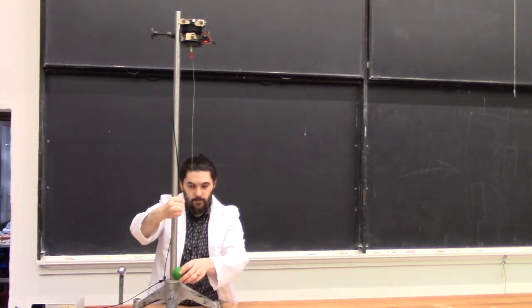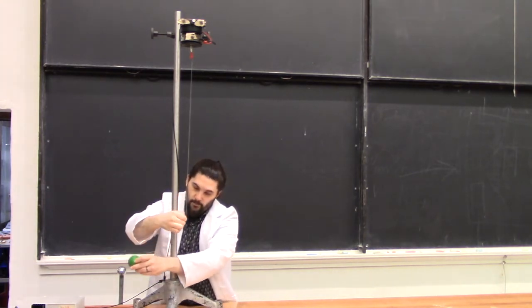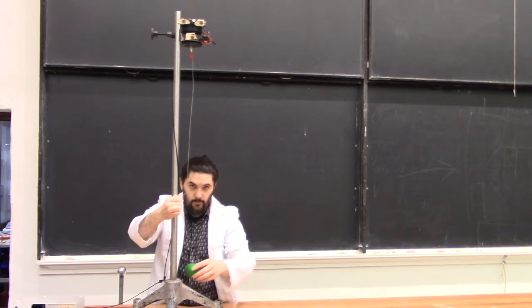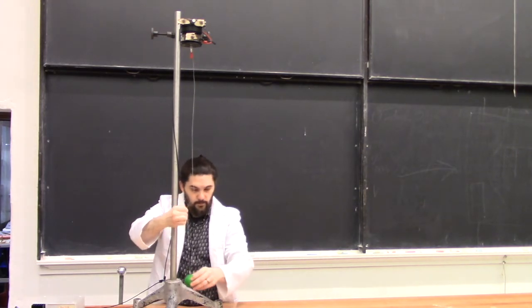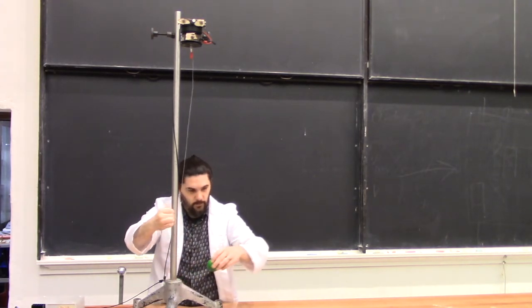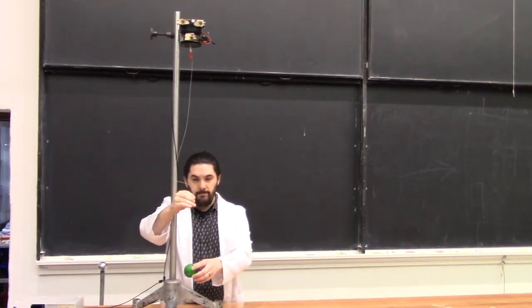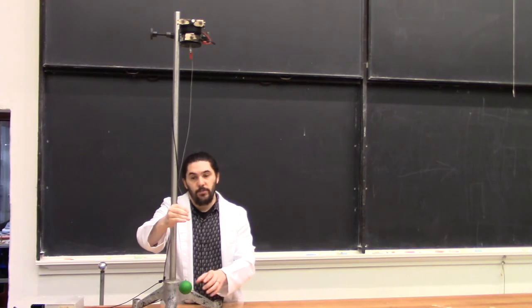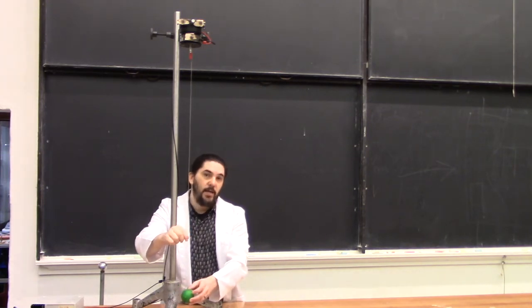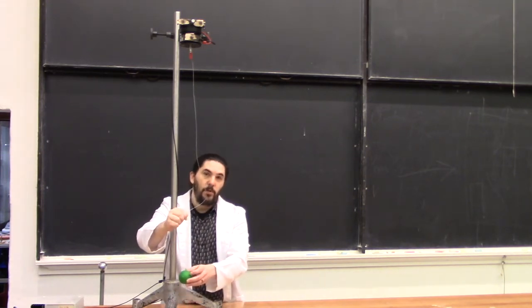we get a motion similar to when a person is on a swing set, in which we add a small bit of potential energy each swing and slowly build up more energy over each oscillation. Since we pull directly along the string, perpendicular to the direction of motion, we're not actually adding any kinetic energy when we pull the bob up.